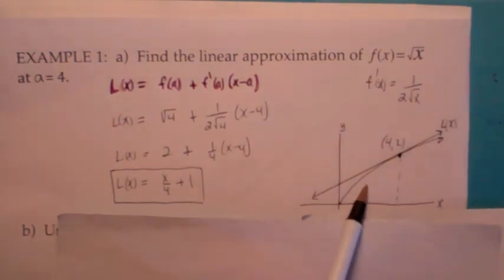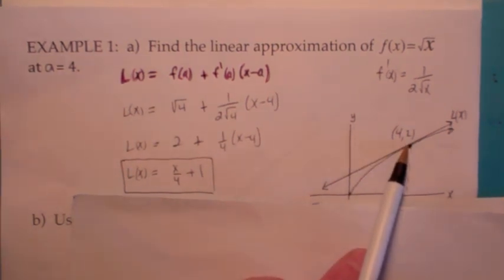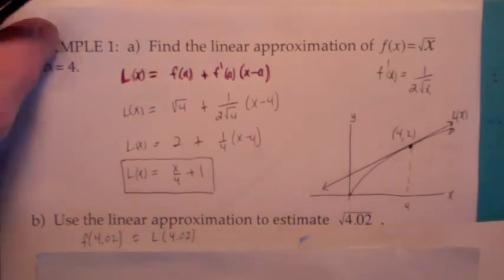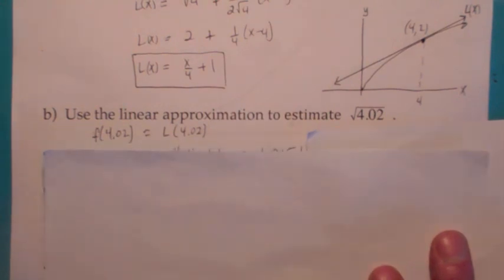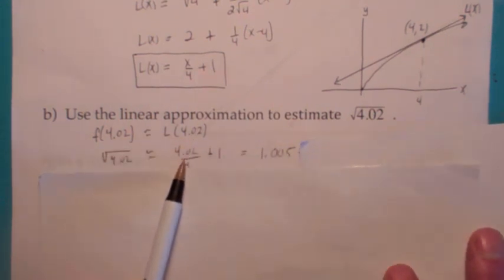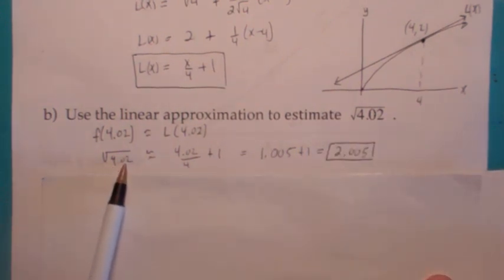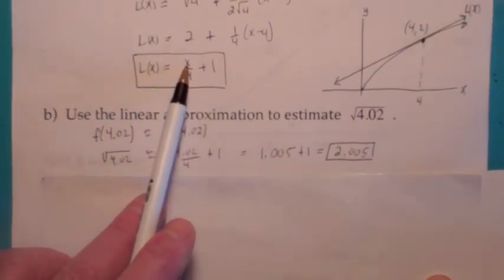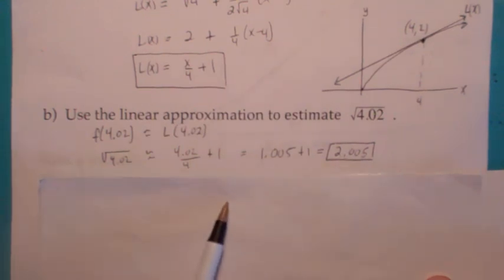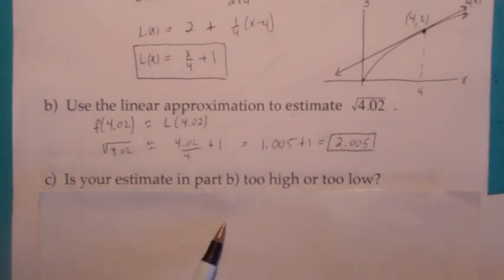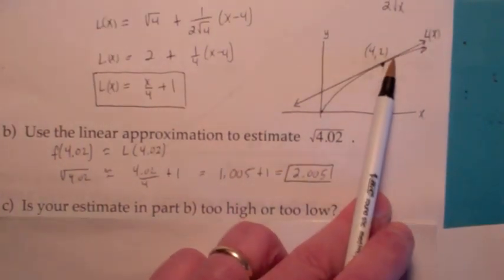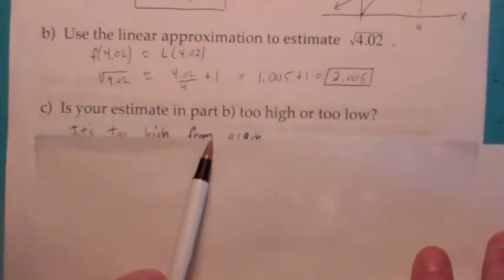The picture looks like this, and it seems reasonable that this equation could be the answer. At the point when x is 4 and y is 2, the tangent line appears to have this equation. Part b: use the linear approximation from part a to approximate the square root of 4.02. Since we're close to 4, f of 4.02 is going to be close to L of 4.02. Plugging 4.02 into L of x, 4.02 divided by 4 is 1.005, so adding 1 gives 2.005. Part c: is that estimate too high or too low? Since the tangent line lies above the function, the estimate is too high.